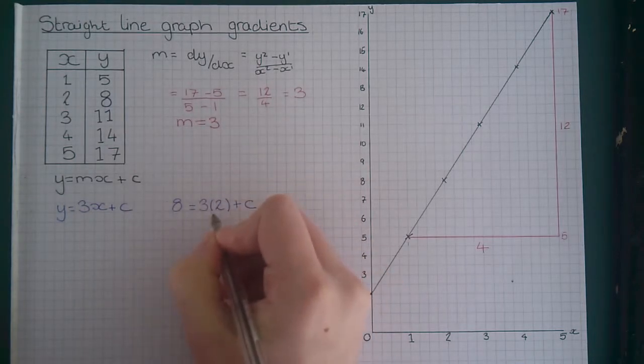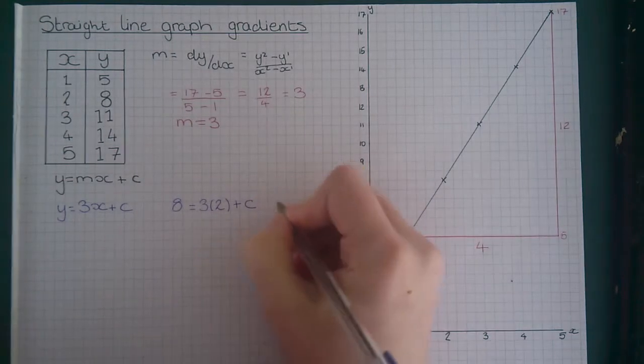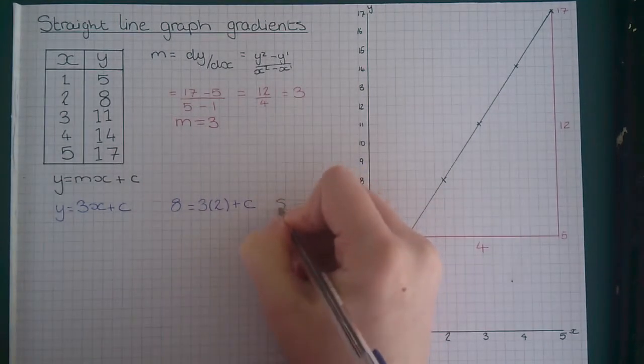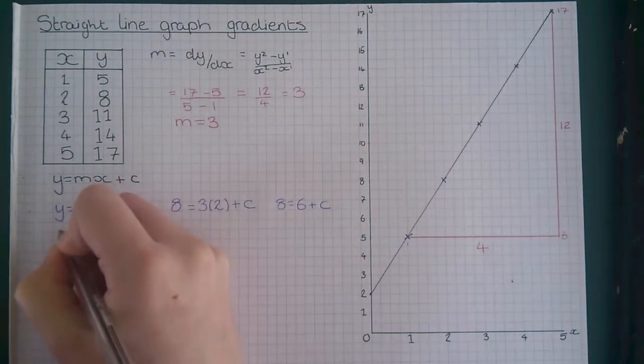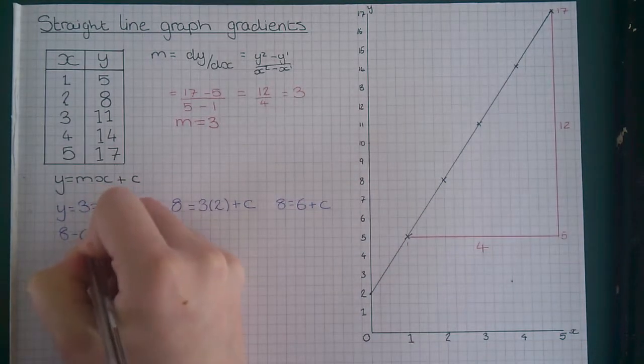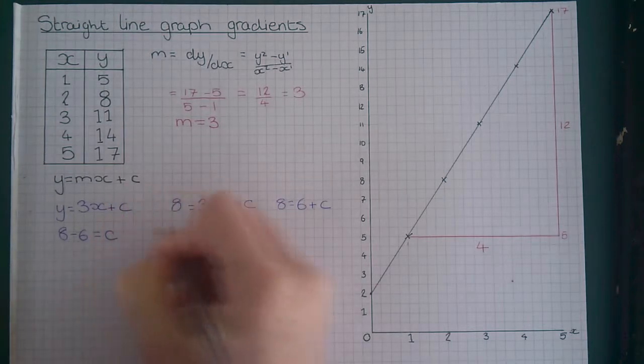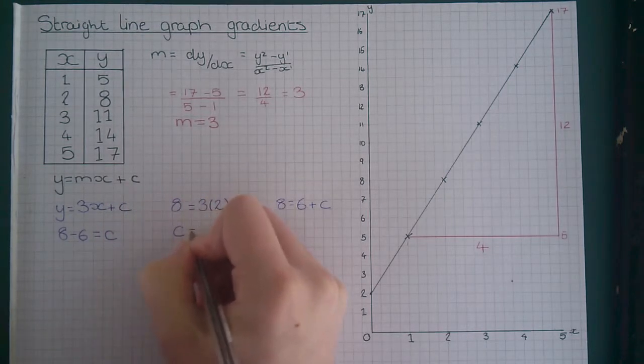3 times 2 is 6. So we've got 8 equals 6 plus c. That means 8 minus 6 equals c and c equals 2.